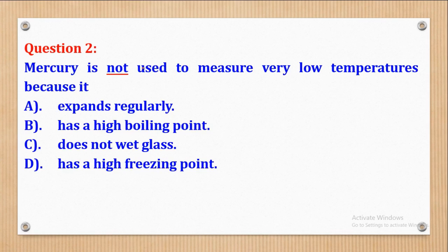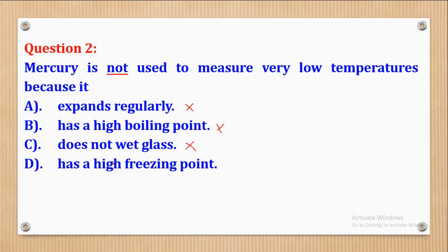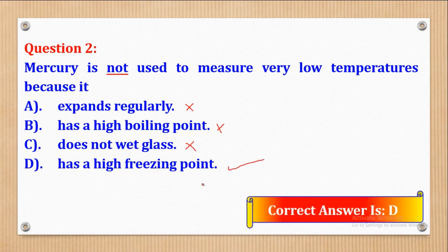Question 2 says that mercury is not used to measure very low temperatures because it: A, expands regularly; B, has a high boiling point; C, does not wet glass; and D, has a high freezing point. Expanding regularly has no relationship with temperature, so we cross that out. Does not wet glass also has no relationship with temperature, so we cross that out. Boiling point is related to high temperatures, so that is also off. Therefore, the correct answer is D — it has a high freezing point.